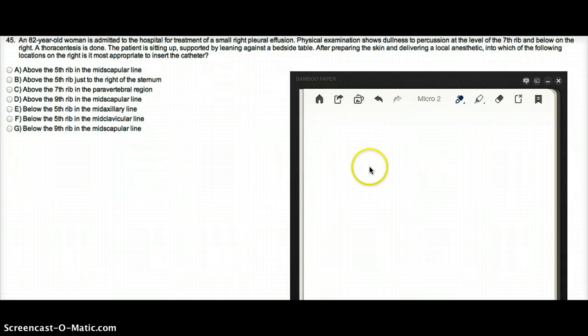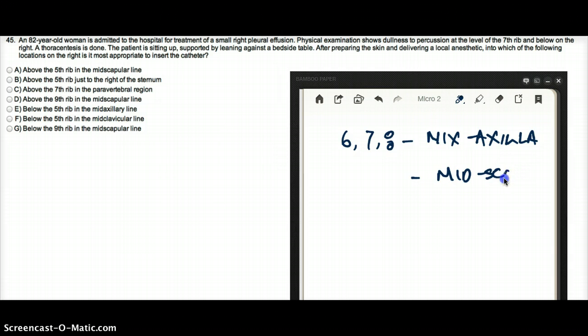So this process of thoracentesis is usually done on intercostal 6, 7, and 8, mid-axillary. But it can also be achieved through the mid-scapula. It can also be done mid-scapula.